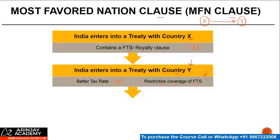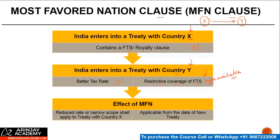So let's say for example, it says that FTS will be taxable in India only when it is satisfying the make available condition. In such a case, if the original treaty which India had with country X had a most favored nation clause, then the reduced rate — which is 10% — or the narrow scope, which is the make available clause, shall also apply to the treaty with country X. And it is going to be applicable from the date of the new treaty, which is the date when this treaty comes into force, not from the date when the original treaty was entered into.